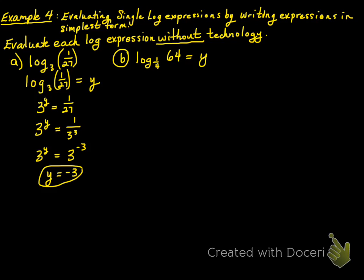Part B: log base 1/4 of 64 equals y, so 1/4 to the power of y has to equal 64. Now, 1/4 is 4 to the power of negative 1, so we have 4 to the power of negative 1 raised to y, which equals 4 to the power of 3. Multiplying the exponents, 4 to the power of negative y equals 4 to the power of 3, which means negative y equals positive 3, or y equals negative 3.